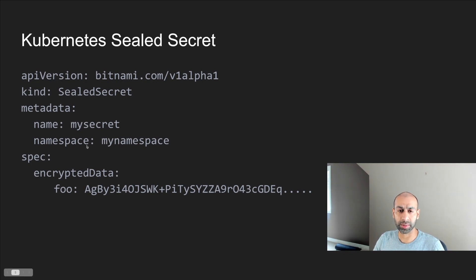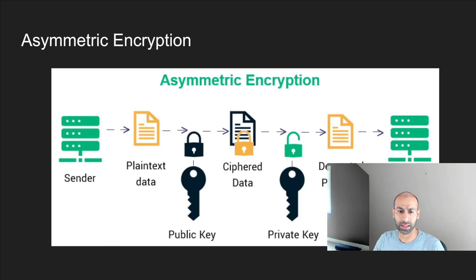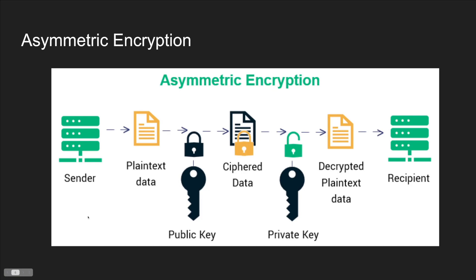Sealed secrets use asymmetric encryption to achieve this. In asymmetric encryption, we have a set of two related keys: a public key and a private key. The owner gives the public key to the sender. The sender uses the public key to encrypt the plain data, producing encrypted data. This encrypted data can only be decrypted using the private key. In the case of sealed secrets, the private key is only present in the cluster and nobody has access to it.